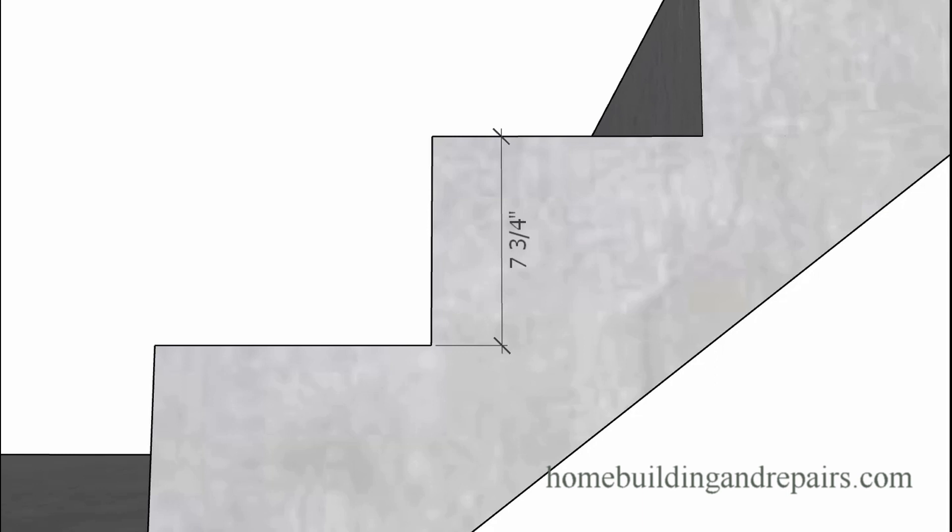The minimum riser height for public, or more or less public buildings is seven inches. And the minimum tread width for a public building is 11 inches. For a home residential building, it is 10 inches. So hope that makes sense.